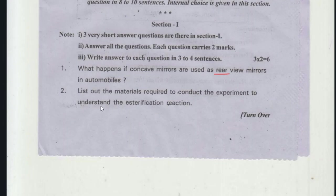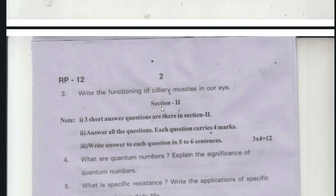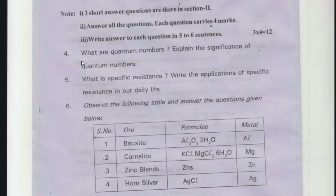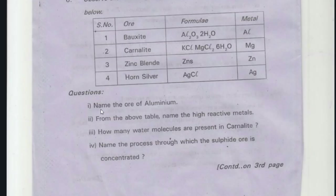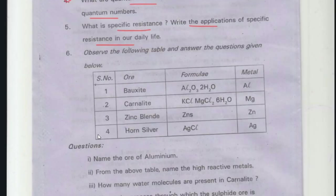What happens if concave mirrors are used as a rear-view mirror in automobiles? List out the materials required to conduct the experiment to understand the esterification reaction. Write the functioning of the ciliary muscle in our eye. Section 2: Explain the significance of quantum numbers. What is specific resistance? Write the application of specific resistance in our daily life. And a table question.